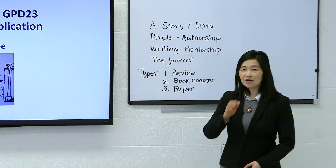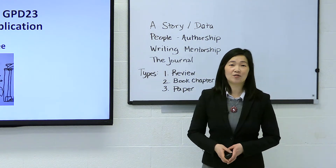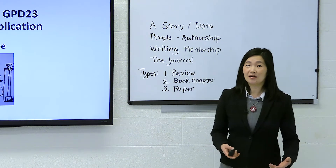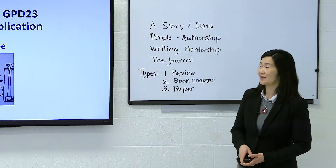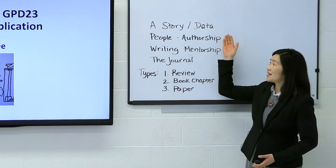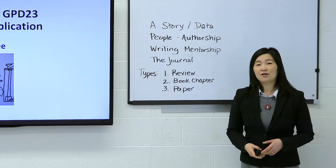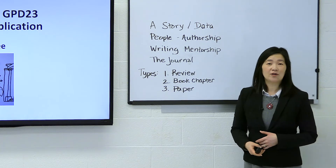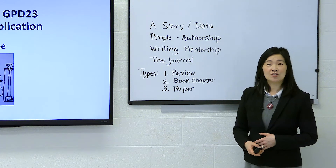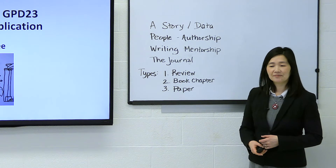So the first thing you need is a story — you're going to need some data. The second thing you have to consider are the people that were involved in the project. These are issues about authorship.